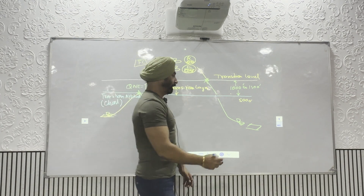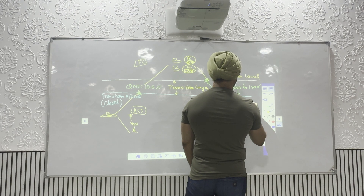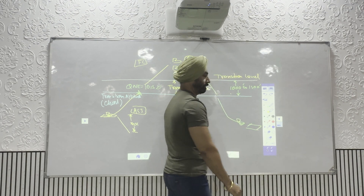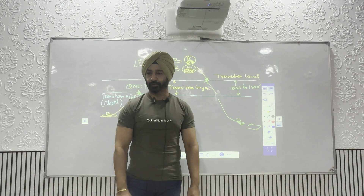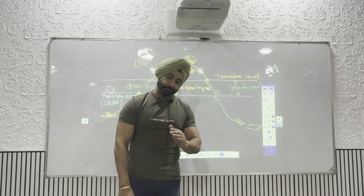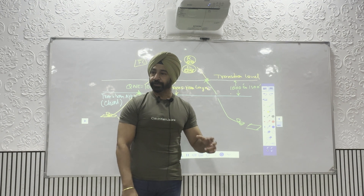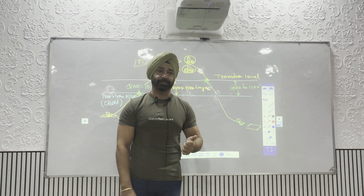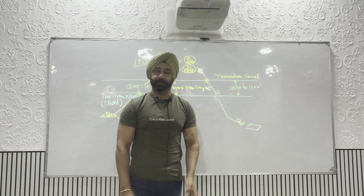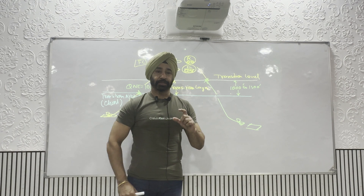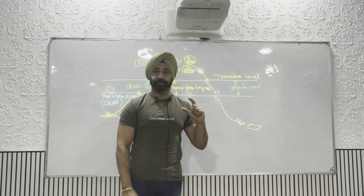That depends — anytime if your QNH is more than standard, the transition layer is 1000 feet. For example, QNH of 1012 or 1011 is less than standard setting, so that time it is 1500 feet. The maximum thickness of the transition layer is 1500 feet.